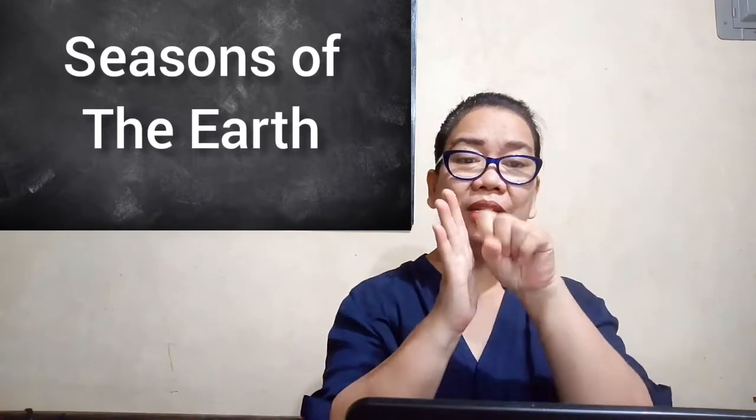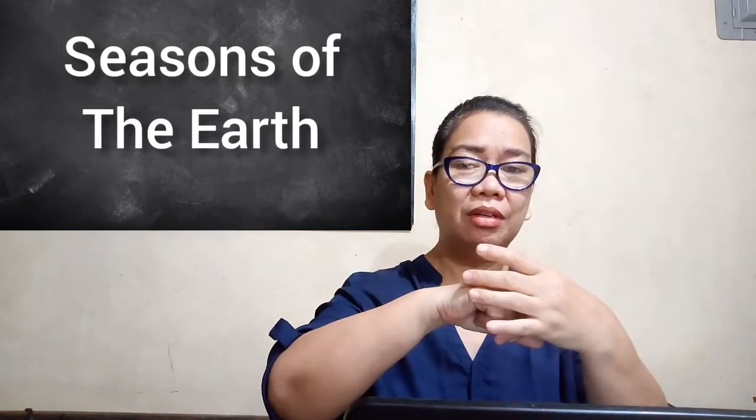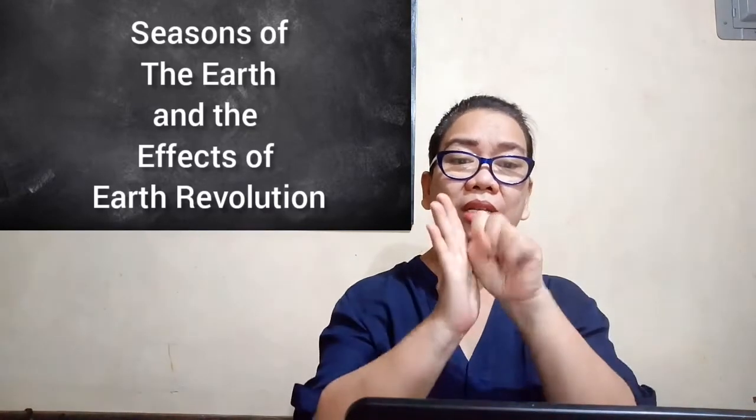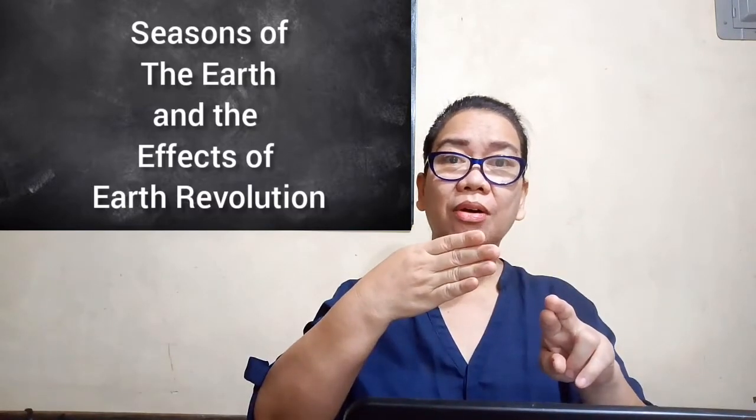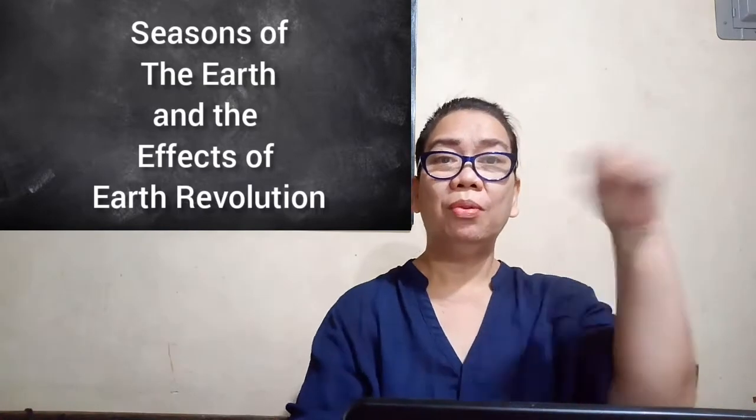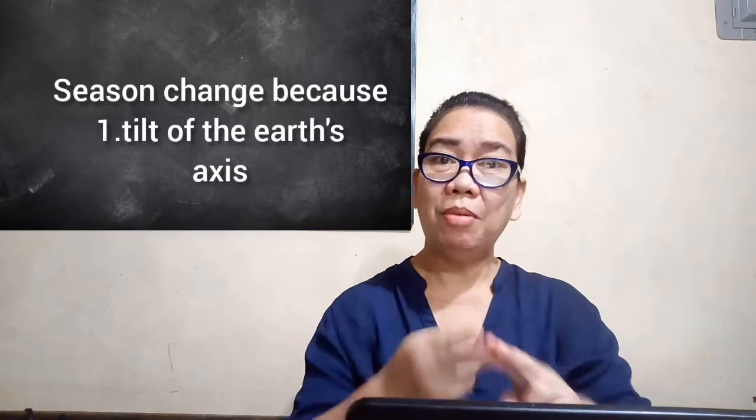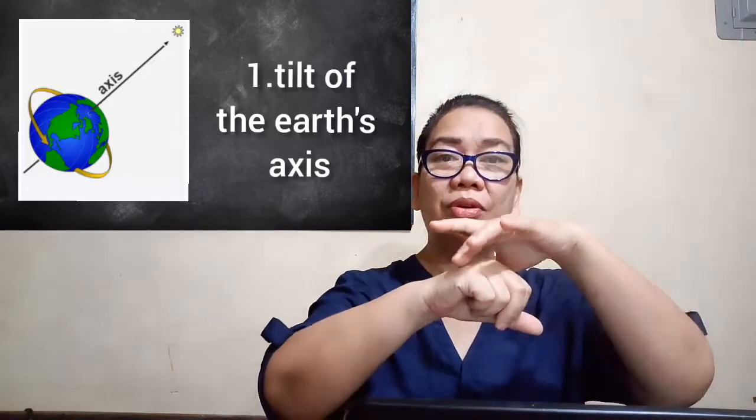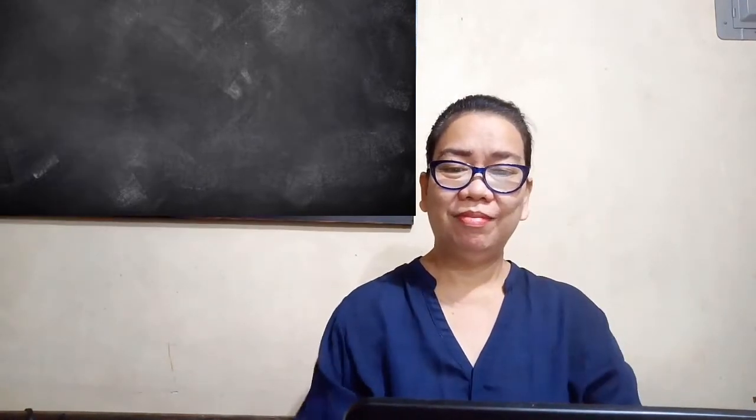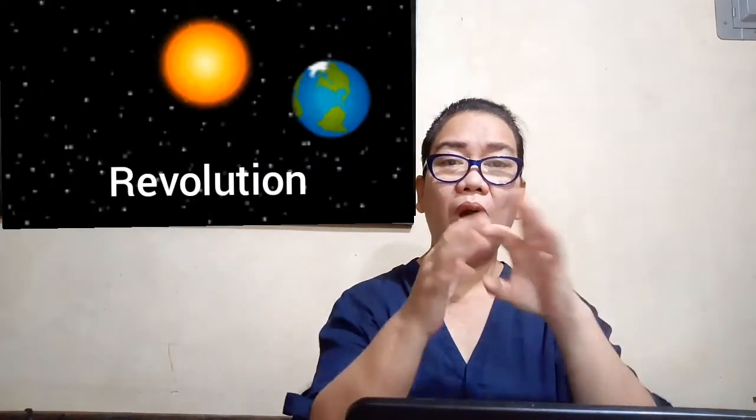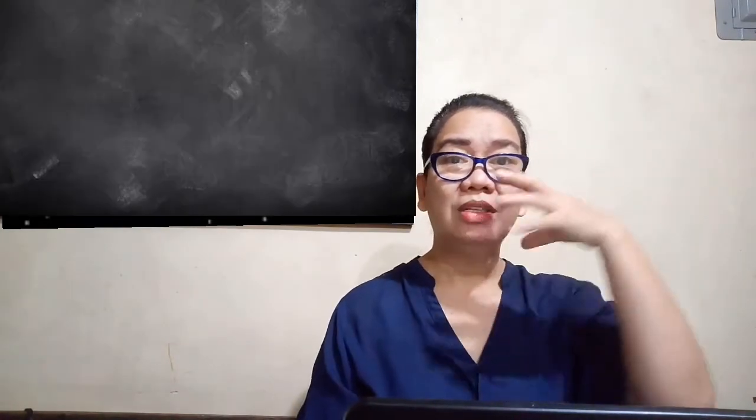Now, do you know that there are different seasons of the Earth? We will learn about these seasons and the effects of Earth's revolution. Seasons change because of number one: the tilt of the Earth's axis, and number two: the revolution around the Sun. The revolution describes the orbit in space.